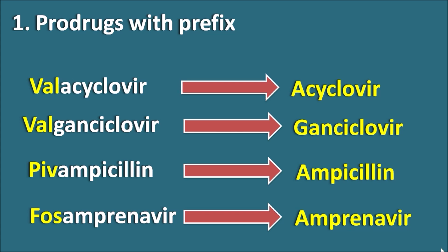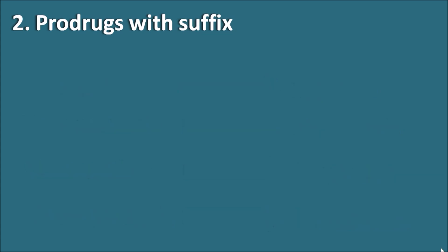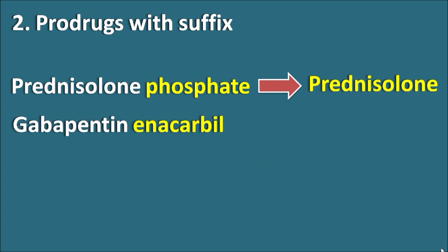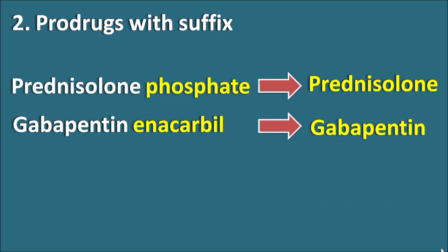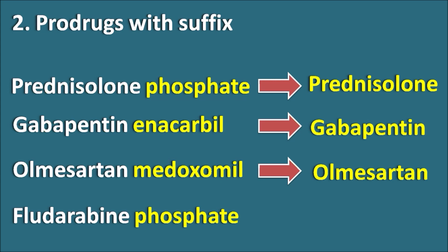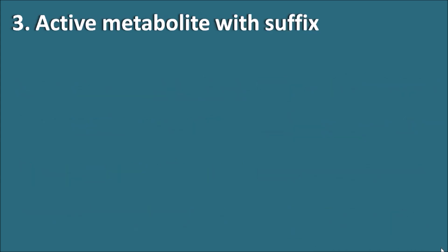Now let us look at prodrugs identified by a suffix. Prednisolone phosphate is a prodrug of prednisolone. Gabapentin enacarbil is a prodrug of gabapentin. Olmesartan medoxomil is a prodrug of olmesartan. Fludarabine phosphate is a prodrug of fludarabine. Now let us see active metabolites identified by a suffix added to the prodrug name.